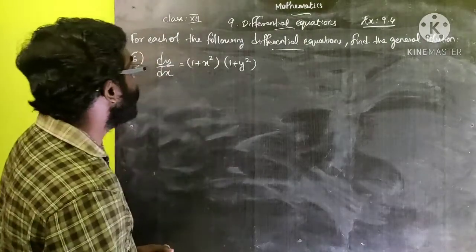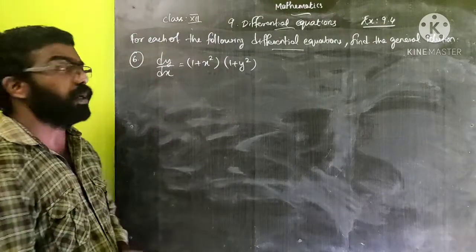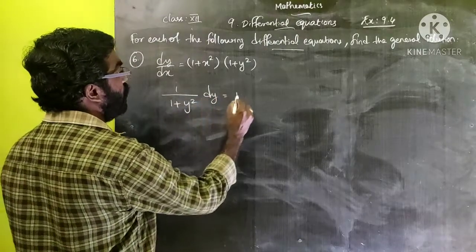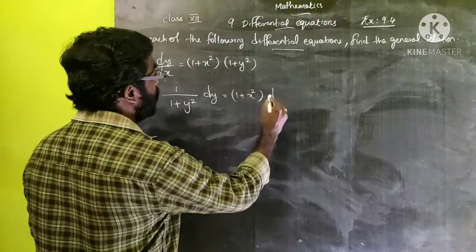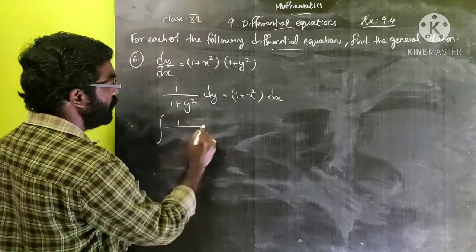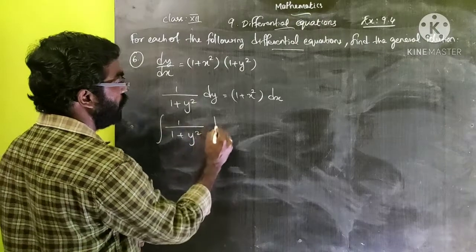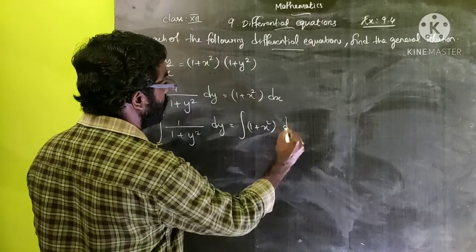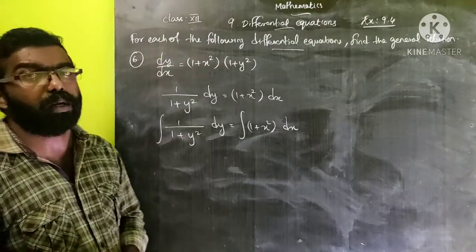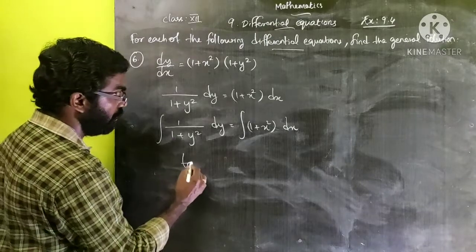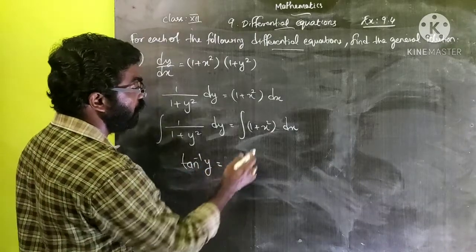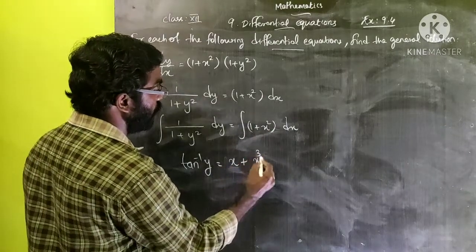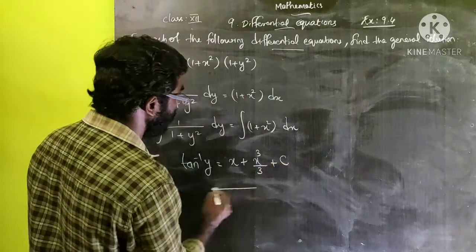Next: dy/dx = (1 + x²)(1 + y²). We write 1/(1 + y²) dy = (1 + x²) dx. Integrating both sides: integral 1/(1 + y²) dy = integral (1 + x²) dx. Integral of 1/(1 + y²) is tan⁻¹y. So tan⁻¹y = integral 1 dx + integral x² dx = x + x³/3 + c.